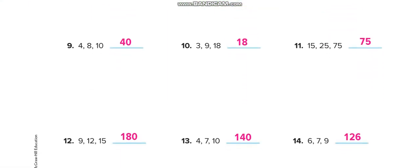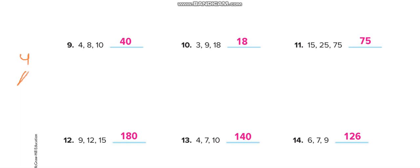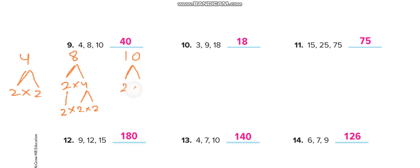When using prime factorization for three numbers — say 4, 8, and 10 — break them down: 4 is 2 × 2; 8 is 2 × 4, and 4 breaks into 2 × 2, bringing that 2 down; and 10 is 2 × 5.